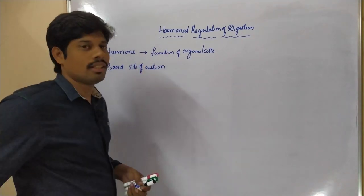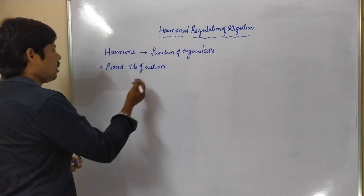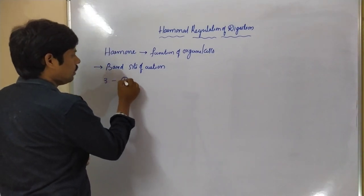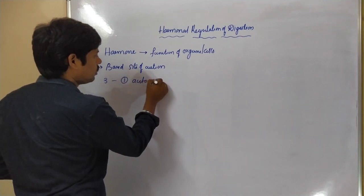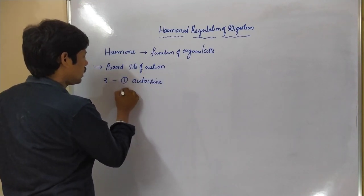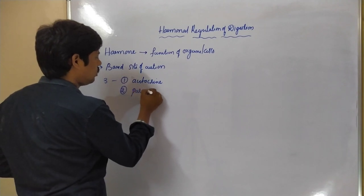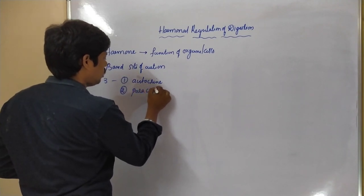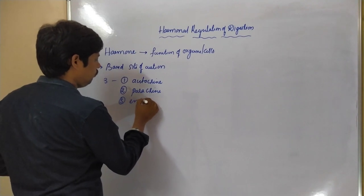Based on the site of action, these hormones are divided into three types: one is autocrine, second one is paracrine, and third one is endocrine.